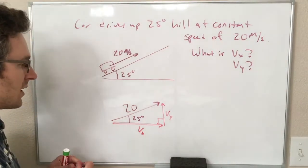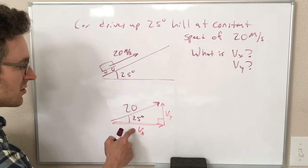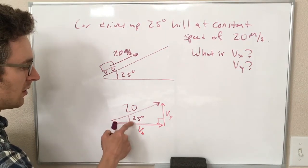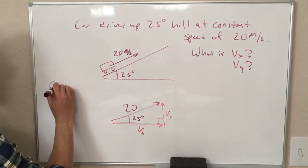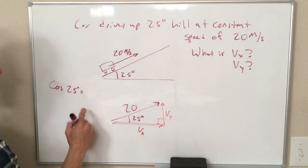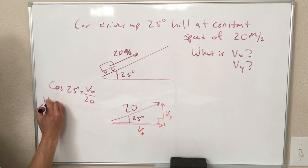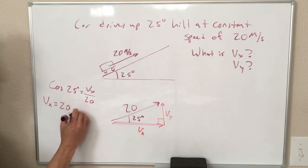So we're going to use sine and cosine. Cosine is adjacent over hypotenuse, so cosine of 25 degrees equals adjacent over hypotenuse. So multiplying both sides by 20,